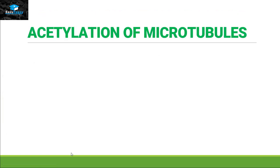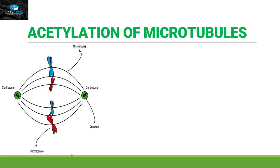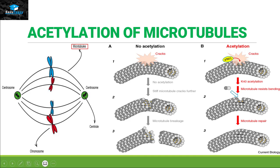Acetylation of microtubules: microtubules are present in every cell and their main function is during mitosis and meiosis, where chromosomes attach to the spindle fibers. The major modification of microtubules is acetylation. Comparing two examples — one microtubule without acetylation and one with — if a crack or damage occurs, acetylation on lysine at position 40 will resist the microtubule from bending and help the repair system. Without acetylation, the crack grows bigger and results in breakage of the microtubule.